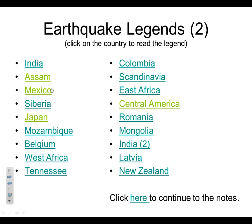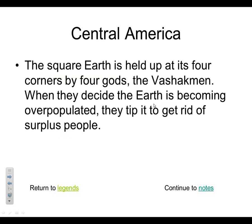In Central America, the square earth is held up at four corners by four gods, the Vashakmen. When they decide the earth is becoming overpopulated, they tip it to get rid of surplus people. It's a very bad story — we have overpopulation and people called surplus people. Must have been very deadly earthquakes. Interestingly, 'tipping the earth' might mean a tsunami came and swept people away, making it look like the earth was tipped. It's interesting to try to figure out what was behind these legends.